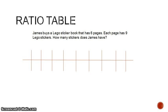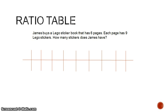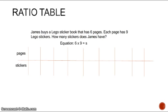Let's take a look at an example here. James buys a Lego sticker book that has 6 pages. Each page has 9 Lego stickers. How many stickers does James have? So to use a ratio table to solve this problem, we first need to put some labels on here so we know what we're doing. James buys a Lego sticker book that has 6 pages. So I'm dealing with pages, and on each page I have some stickers. So my top part of my ratio table here is going to be counting my pages, and the bottom part of my ratio table is going to be counting how many stickers go on each page.